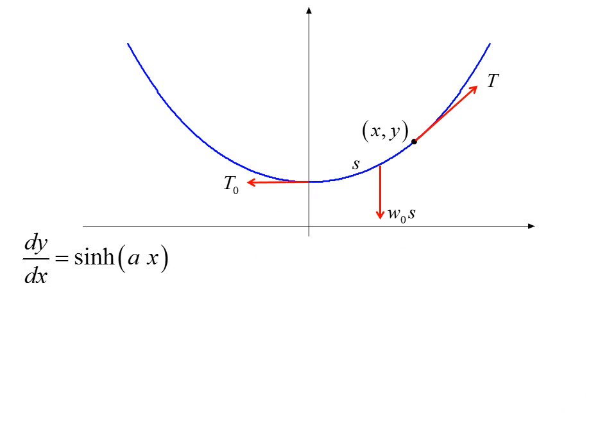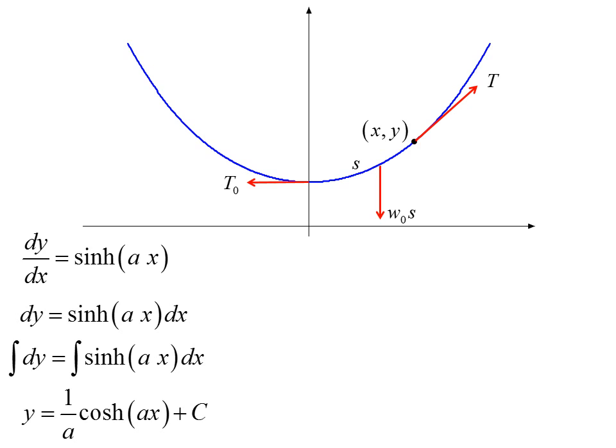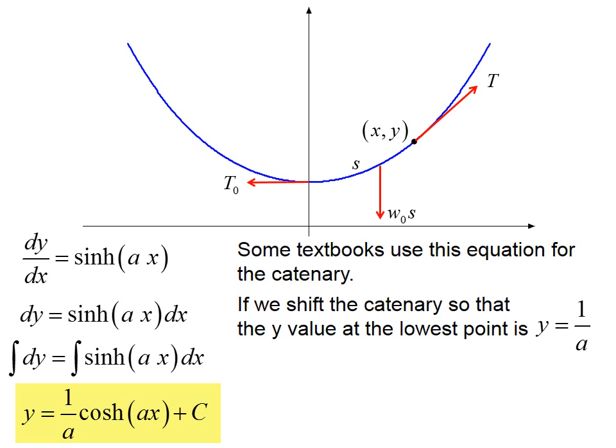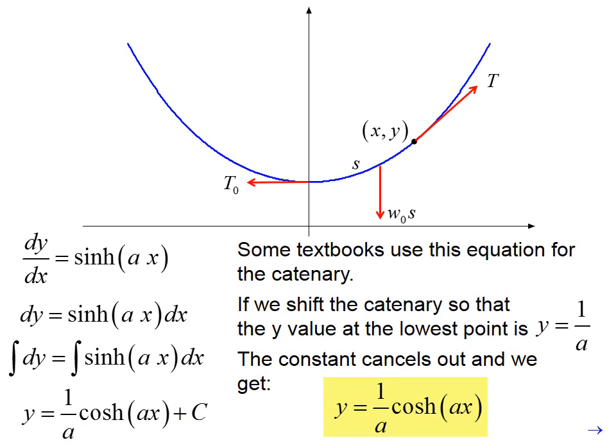Starting with dy dx equals sinh ax, we move the dx to the right side and integrate both sides, giving us y equals one over a cosh ax plus c. Some textbooks use this equation for the catenary. If we shift the catenary so that the y value at the lowest point is y equals one over a, the constant cancels out and we get y equals one over a cosh ax.